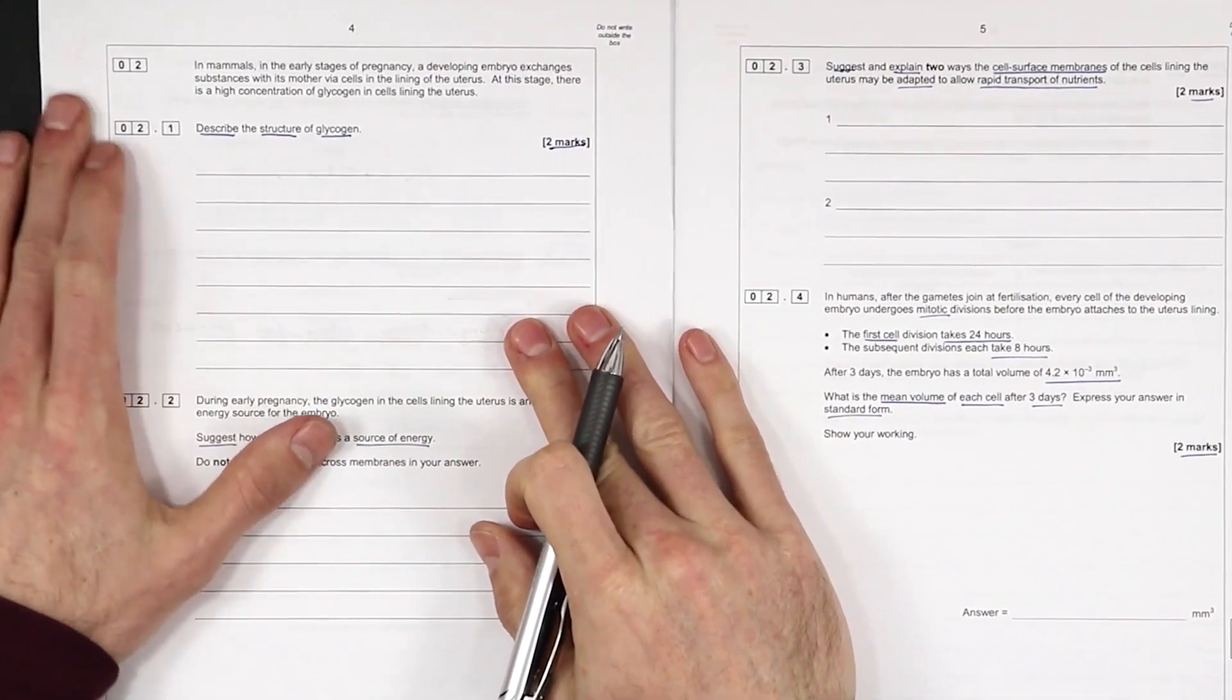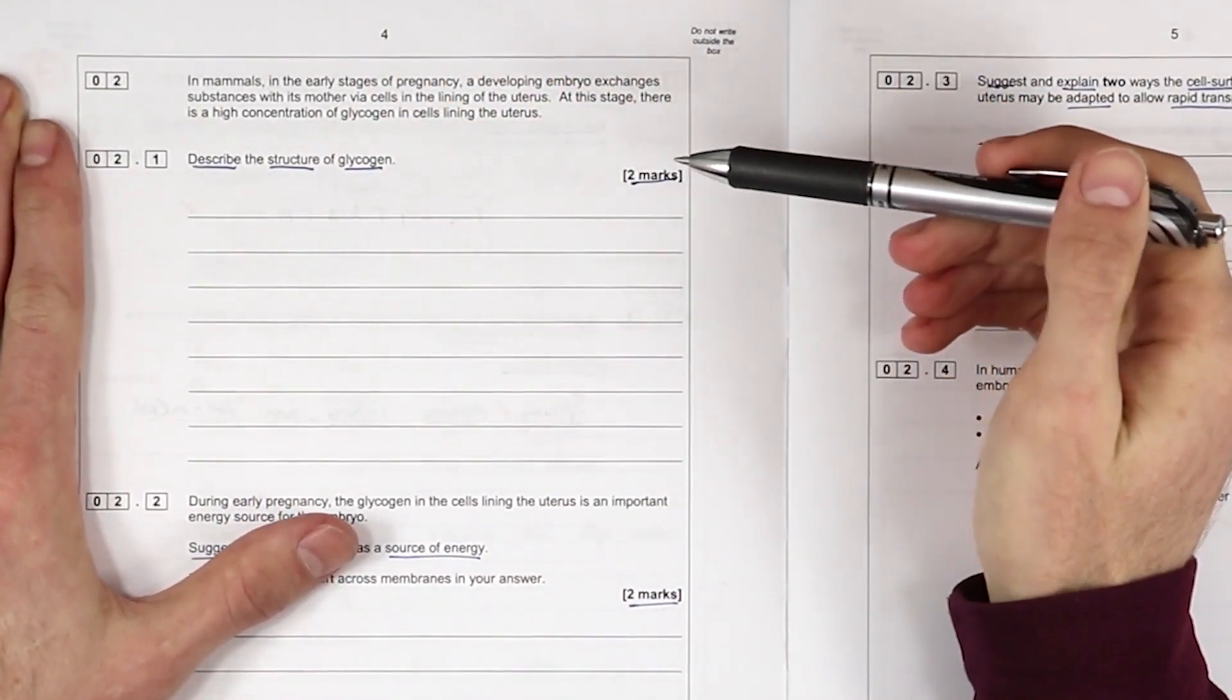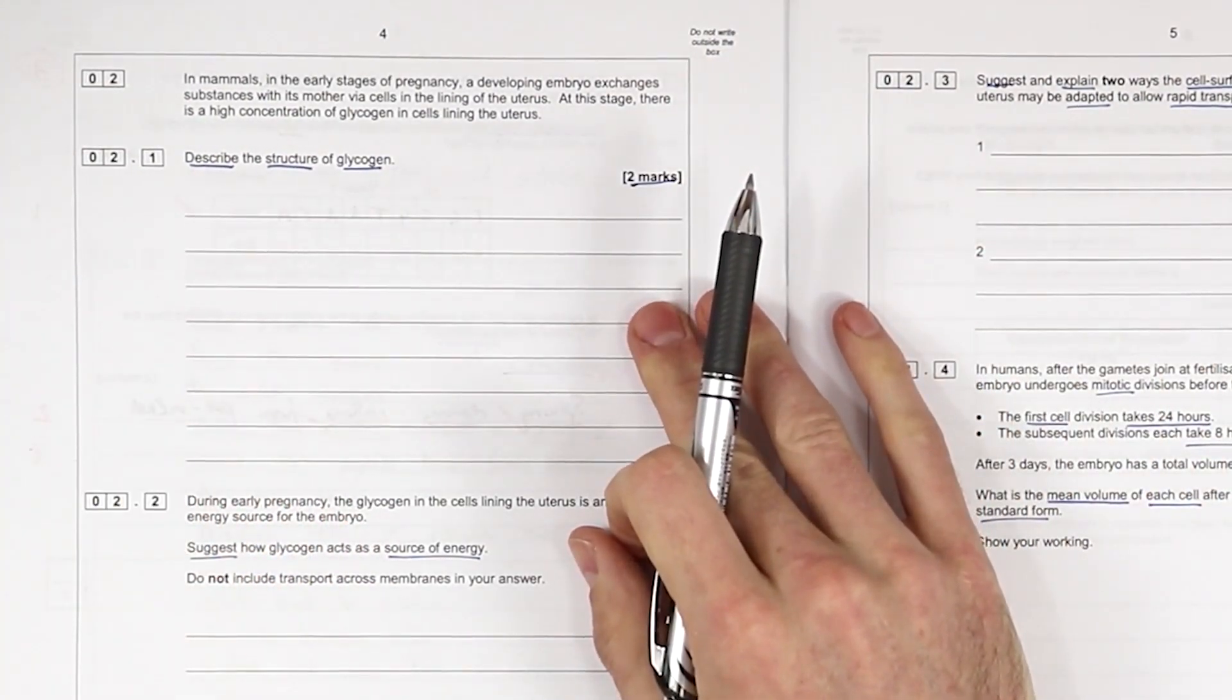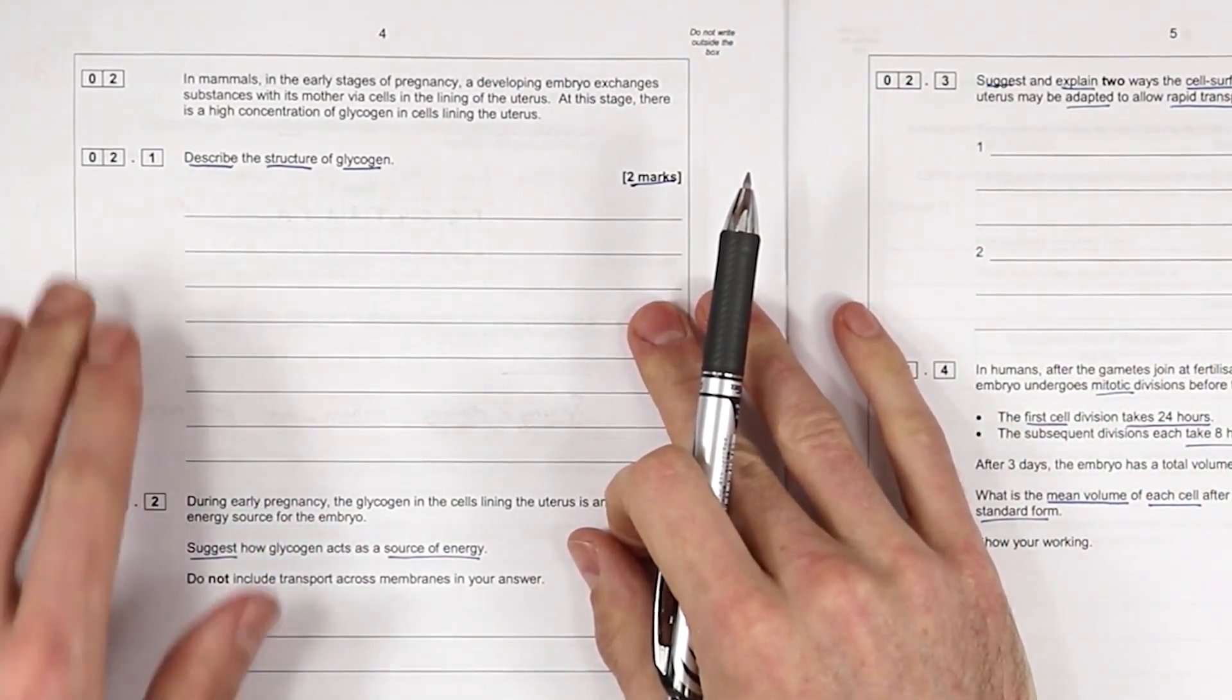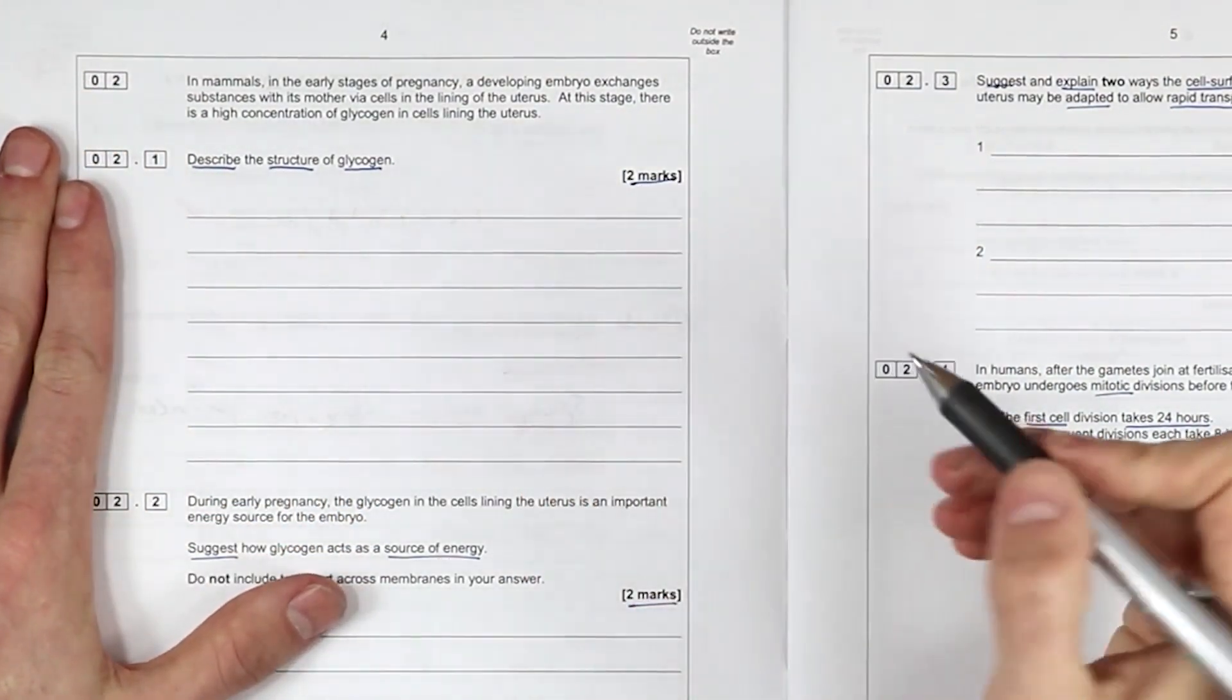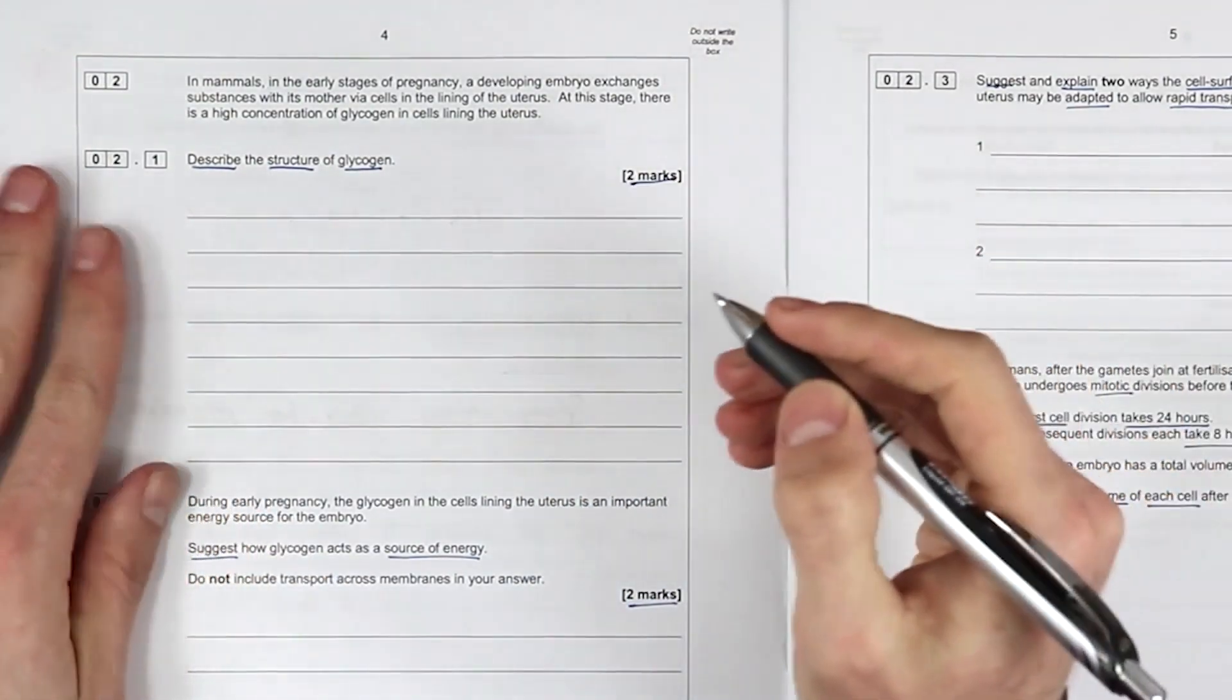Okay question 2, 2.1 describe the structure of glycogen. We don't need to know any of this intro to the question. So what are they looking for? Always looking for bonding, they're always looking for branched or unbranched, so let's just see what comes out of my pen when I start this. So it's a polymer of glucose.